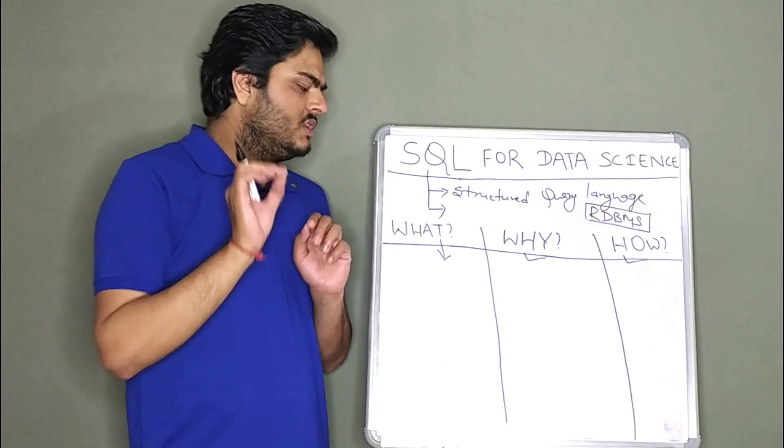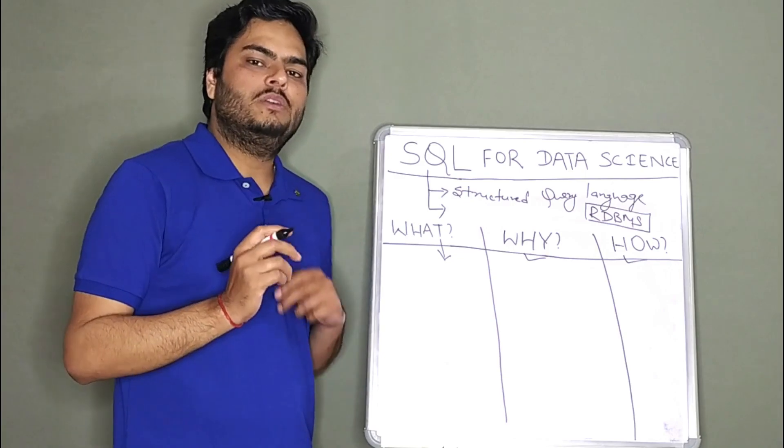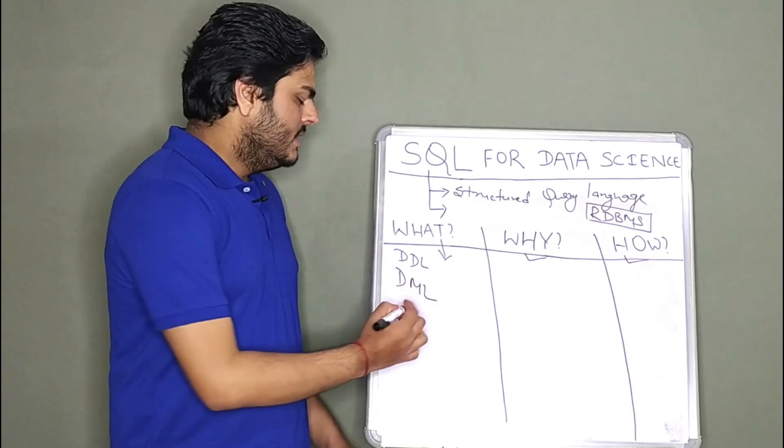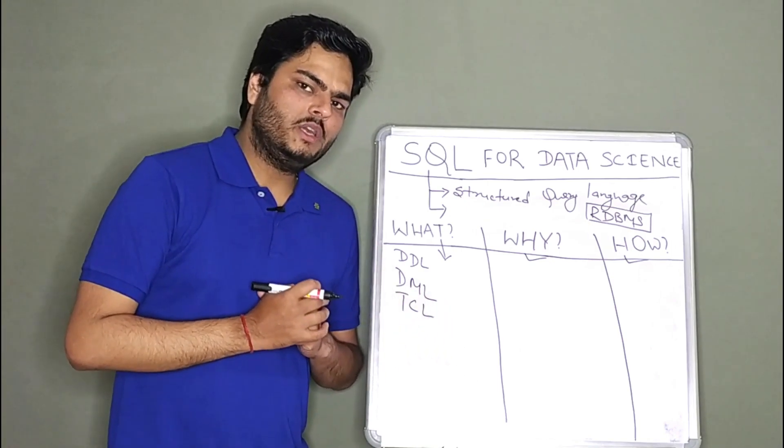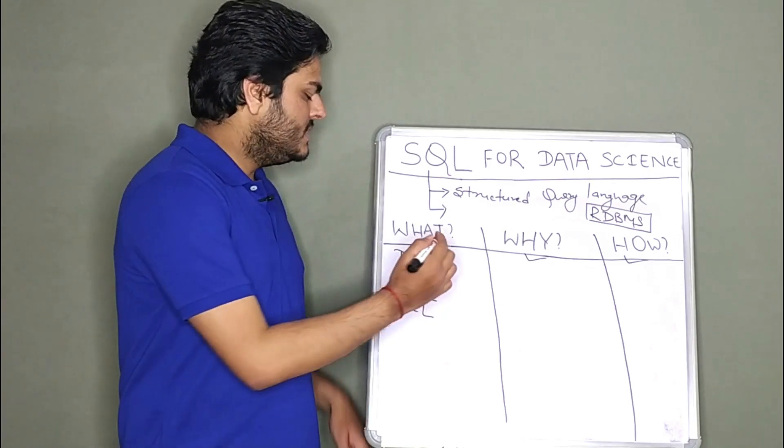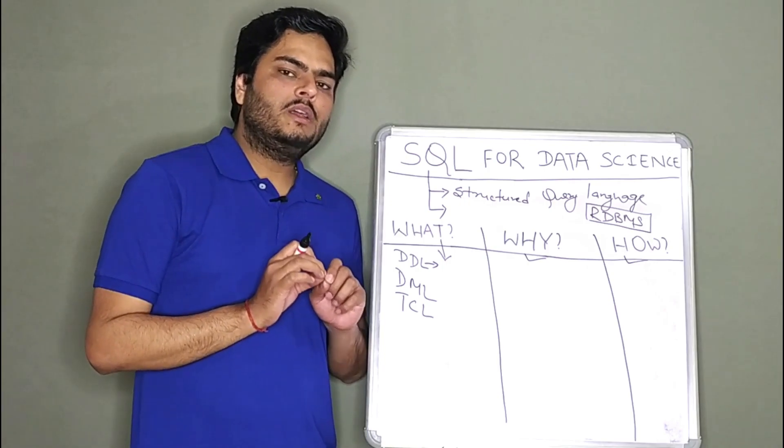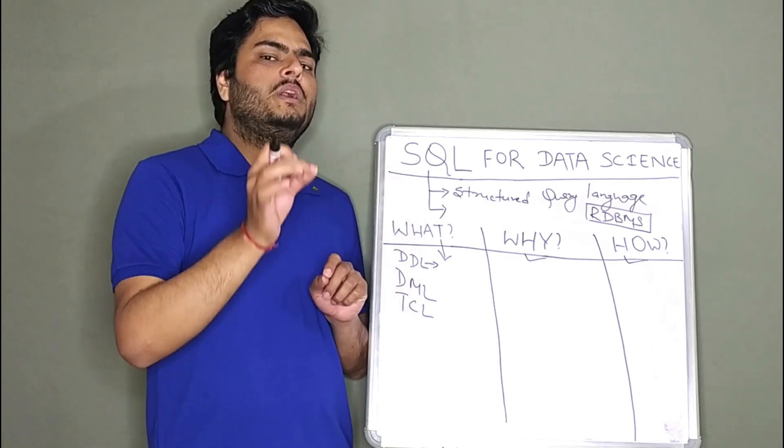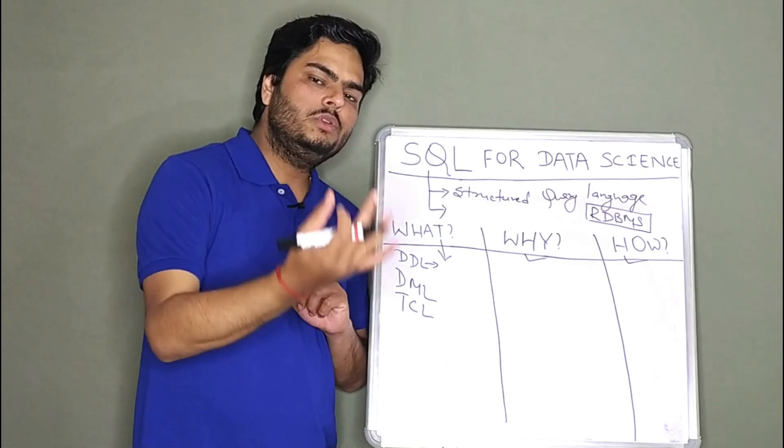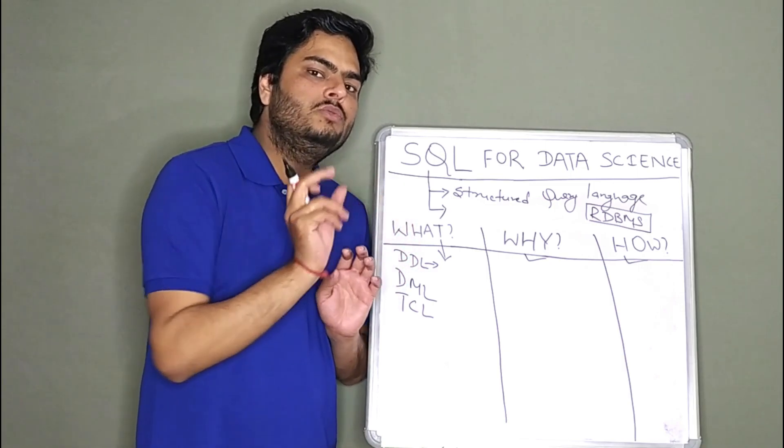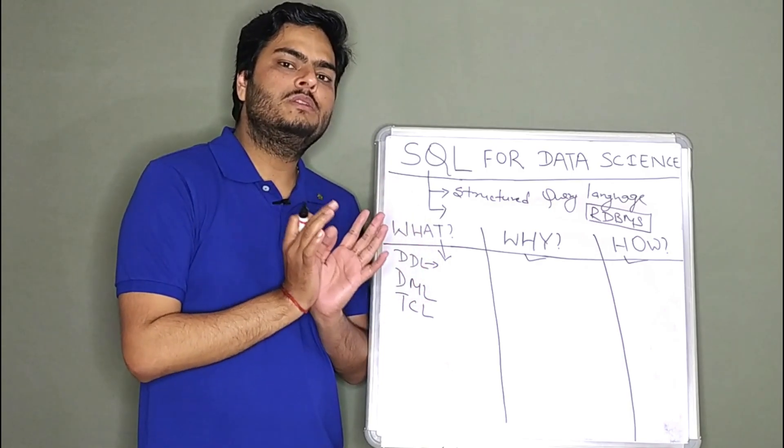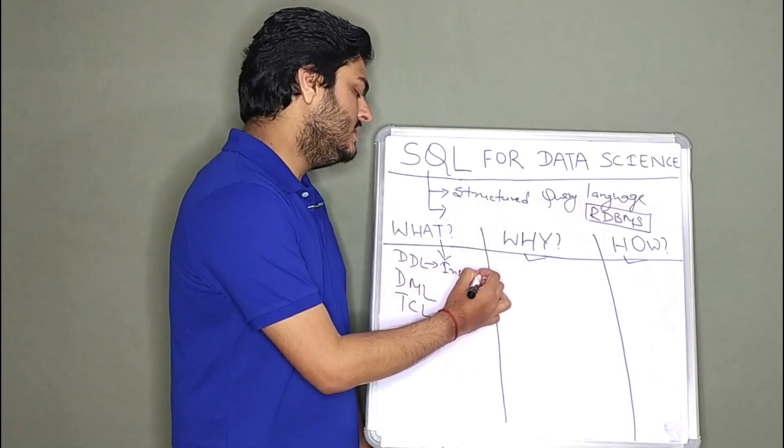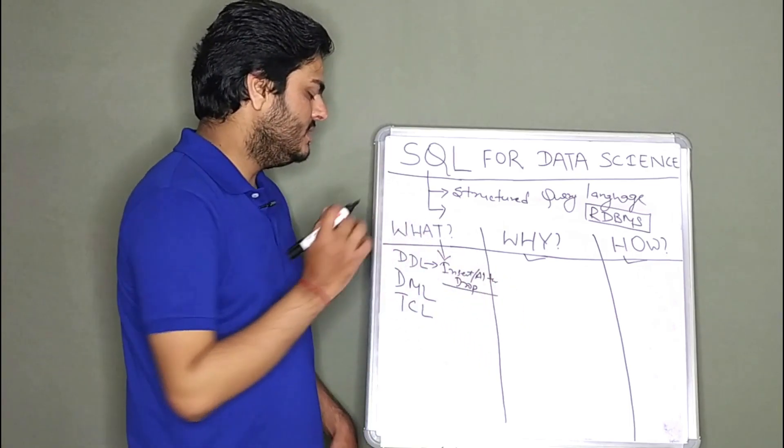If you come one level down, then SQL can be typically divided into three segments or three buckets. One is called data definition language. Another is called data manipulation language. And third is called transaction control language or data control language. The important thing to understand here is I will first talk about what is data definition language. In SQL, there are various commands or various queries that you use. For example, if you want to create a table in SQL, you use a command called create. If you want to drop a table in SQL, you use a command called drop. All those commands using which you create, drop or alter your data in database come under the bucket of DDL. So I am talking about insert, alter and drop. Pardon me for my bad handwriting here.